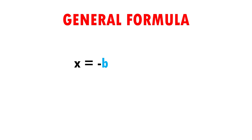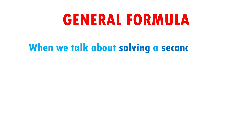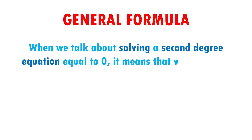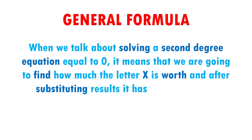Very easy, right? The general formula is the following: x equals minus b plus or minus the square root of b squared minus 4ac, all divided by 2a. As you can tell, there are two signs, plus and minus, which means we are going to obtain two results — one using the plus sign and another using the minus sign. Solving a second-degree equation equal to 0 means finding the value of x such that after substituting, the result is 0.